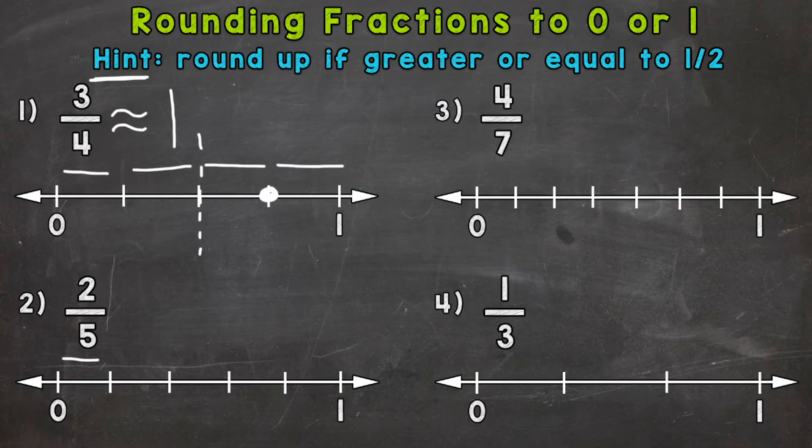So this would be 1 fifth, 2 fifths, 3 fifths, 4 fifths, and 5 fifths, which is equivalent to one whole. And on this one, I'll label so we can see here. And if you need help with placing fractions on number lines, I do have a video on how to do this. I dropped that link down in the description. And lastly, 4 fifths here. So 2 fifths is right here.